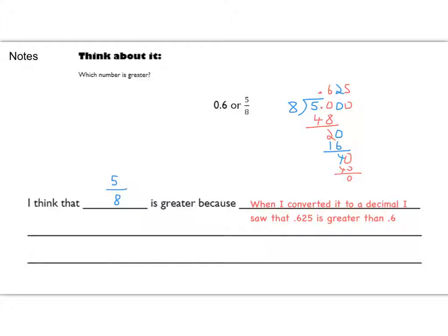What I did here was I converted the fraction to a decimal in order to more easily compare them. Through that process I got 0.625, and then I noticed that 0.625 is greater than 0.6. So that's how I did that problem. We're going to look a little bit more at comparing numbers and some tips in the next couple of slides.